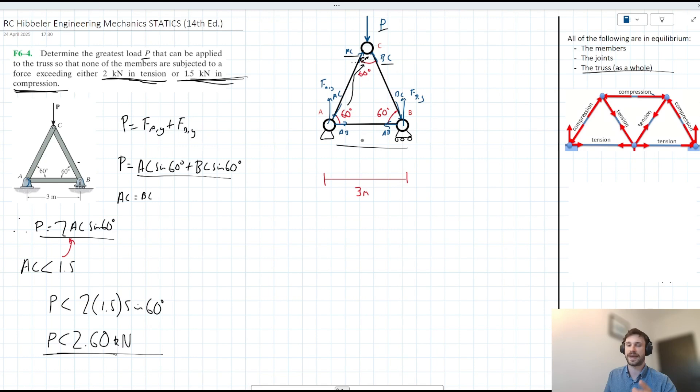We also want to consider member AB, right? So let's go ahead and do that. We could derive an idea of AB here by either looking at joint A or joint B. Let's look at joint A. So at A, if we resolve horizontally, we can say, well, we can say the sum of the forces acting horizontally here is equal to zero. Therefore, things acting to the left equal things acting to the right. What do we have acting to the left? We have the horizontal component of AC.